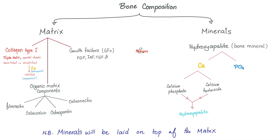Bone biochemistry — bone composition: you have matrix and minerals. The matrix of bone is collagen, specifically type 1. To make your collagen stronger, add minerals such as calcium — i.e., mineralize your matrix. Other organic matrix components include osteocalcin, osteopontin, osteonectin, fibronectin, and growth factors. Minerals include calcium and phosphate, together called hydroxyapatite minerals — which can specifically refer to calcium phosphate and calcium hydroxide. To summarize: you have matrix (collagen) and minerals (calcium).